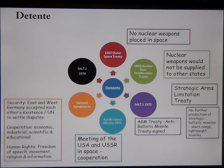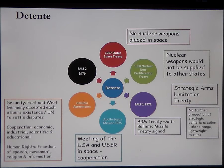Cooperation would be economic, industrial, scientific, and educational. For example, the USA would buy oil from the USSR and the USSR would buy wheat from the USA. Scientifically, they would share information and research in medicine and space. Educationally, there would be student exchanges.